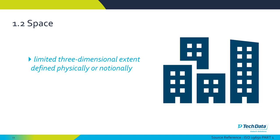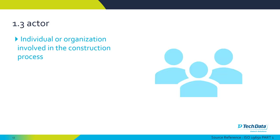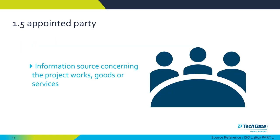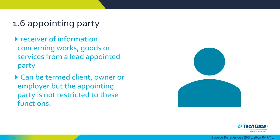Other terminology includes 'spaces,' defined as a limited 3D extent defined physically or notionally. 'Actors' are an individual or an organisation involved in the construction process. 'Appointments' are agreed instructions to provide information on a BIM level 2 project. 'Appointed parties' are the information source providers concerning the project or the built asset, or those providing goods or services for that project. The 'appointing party' is also known as the client, owner, or employer.